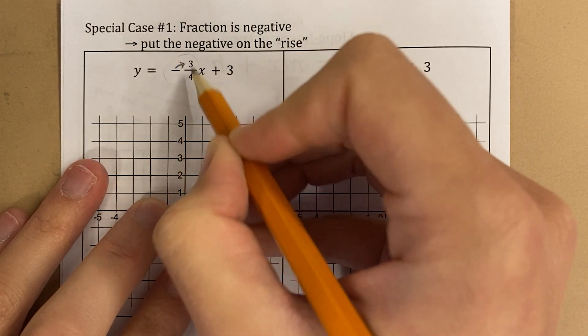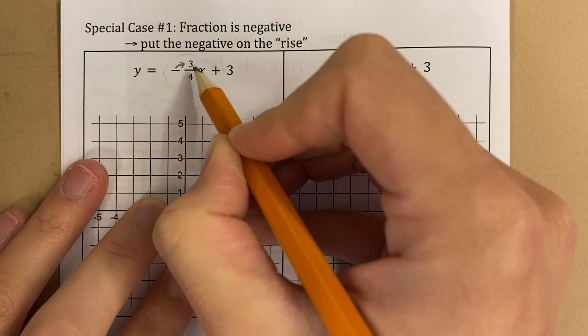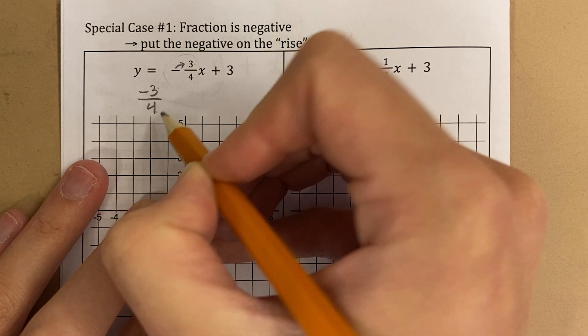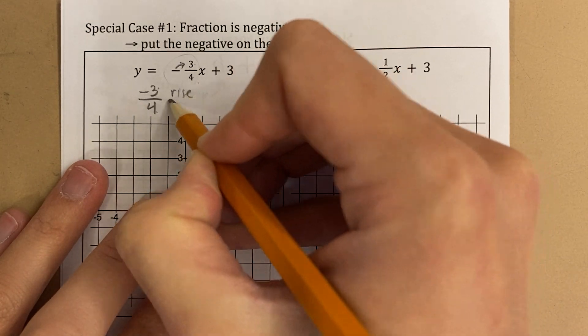Okay, this is a negative number, which means this is division, right. This means it's a negative divided by a positive. So I'm going to make this into a negative 3 divided by positive 4. So this is my rise over run.